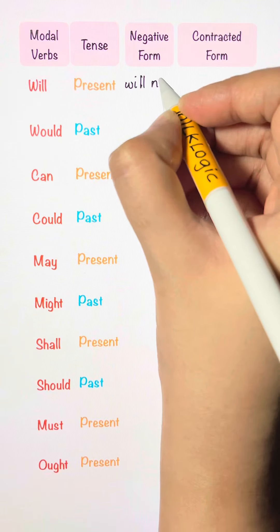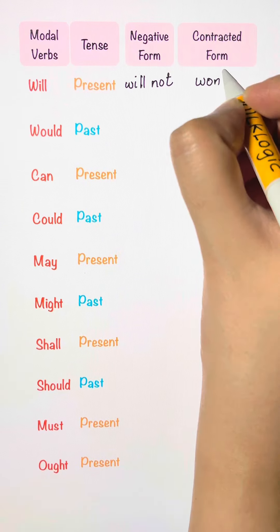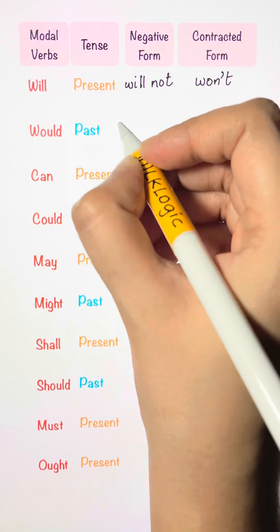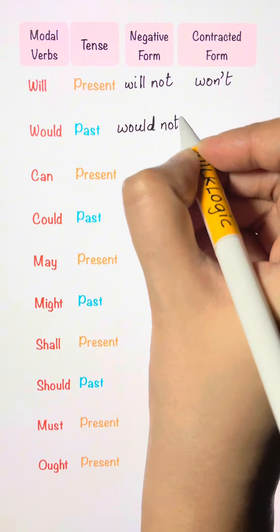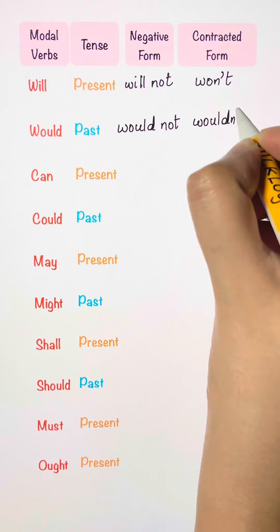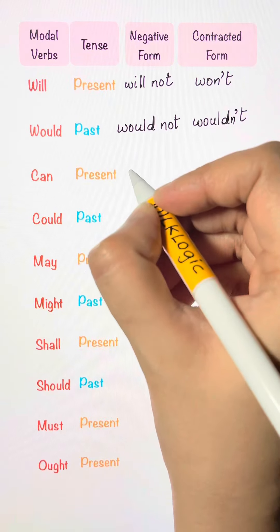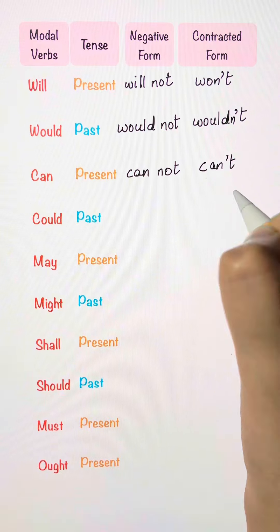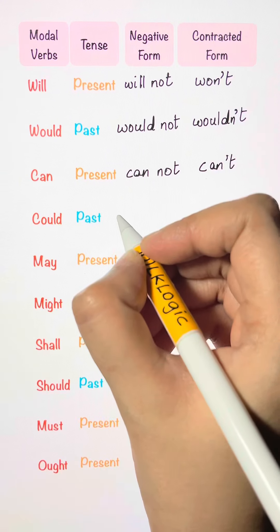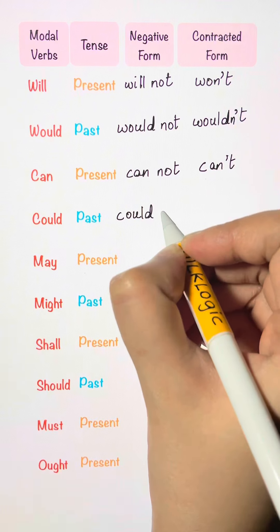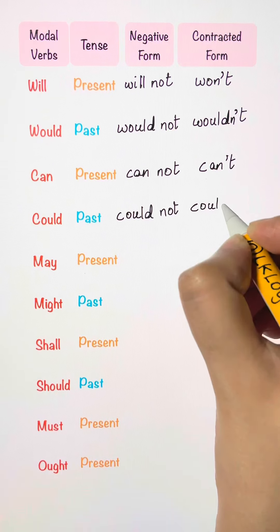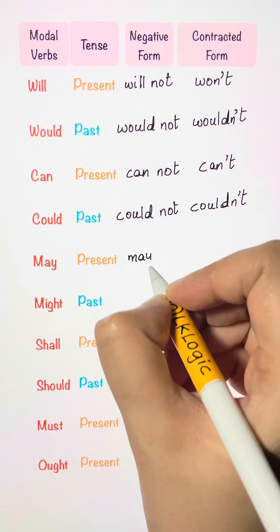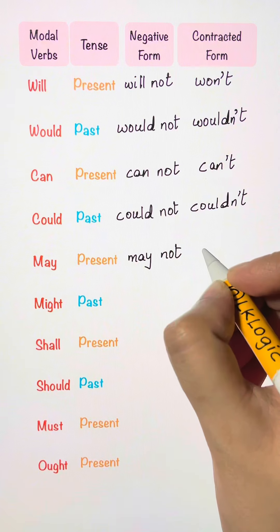Will, will not, won't. Would, would not, wouldn't. Can, cannot, can't. Could, could not, couldn't. May, may not, mayn't.